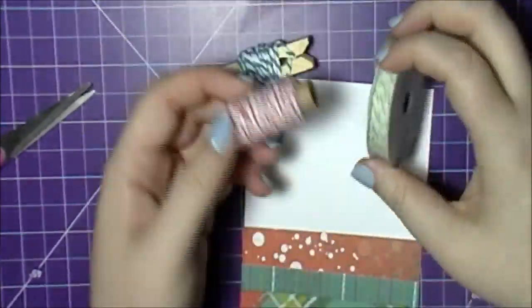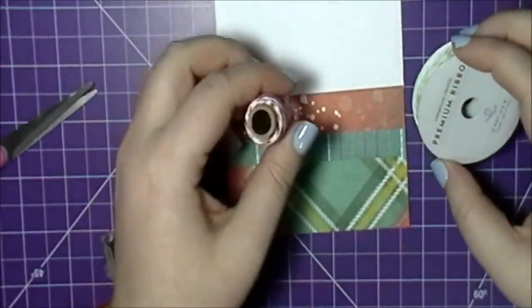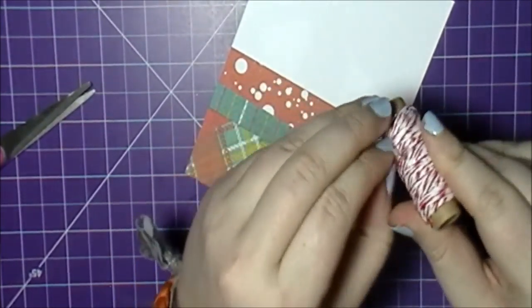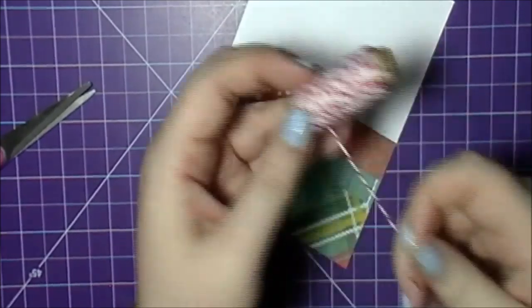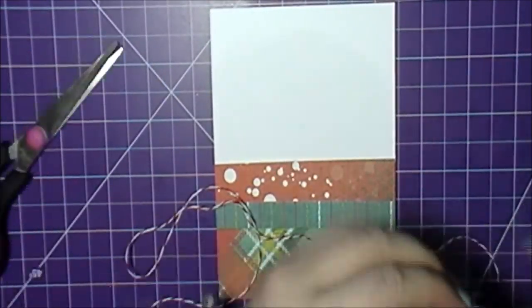If I had it back, I would have stamped my sentiment first before adding the Baker's twine, because the Baker's twine actually got in the way of my stamping and I had to do a double stamping of the sentiment I used.